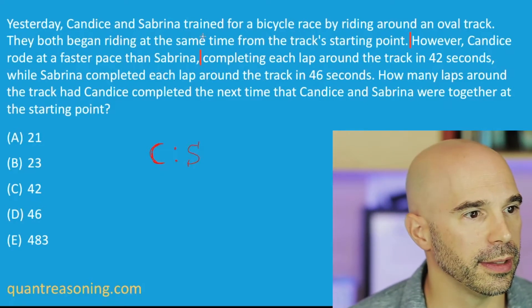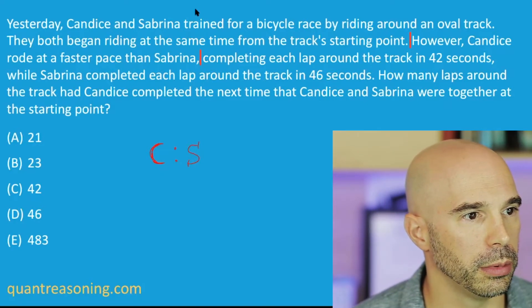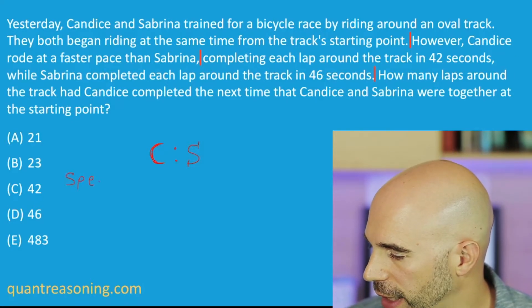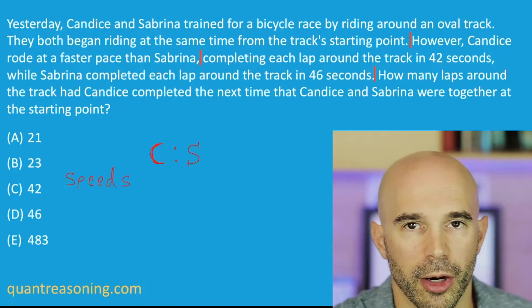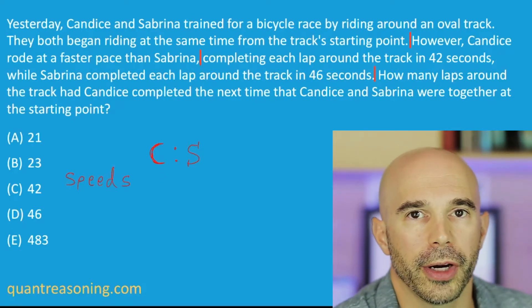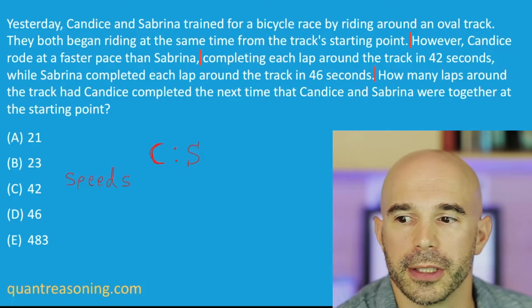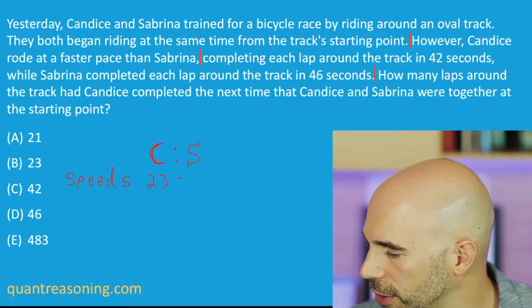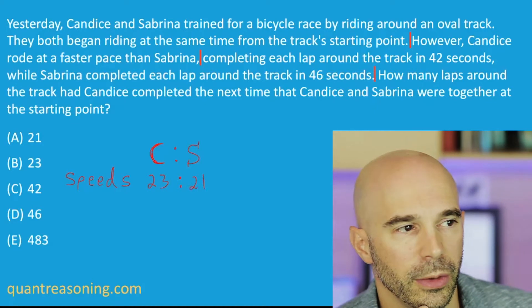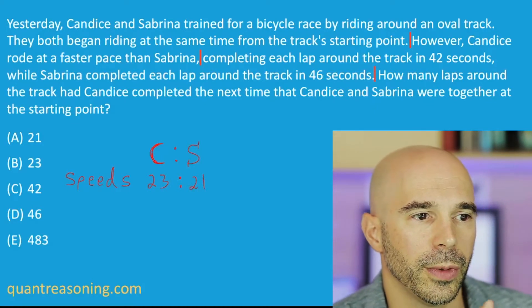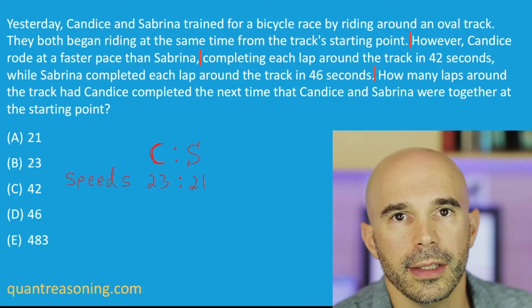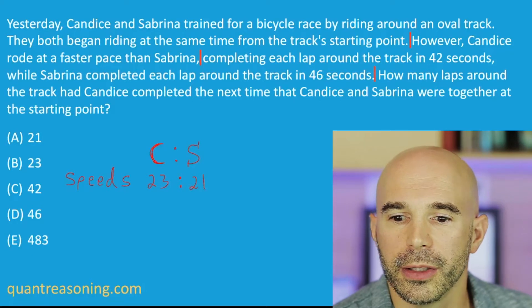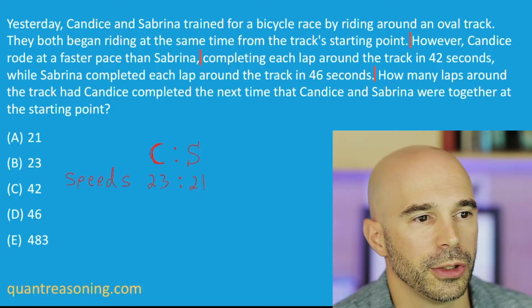As I continue reading, the next place I would pause is probably at the period. I'm interested in the speeds. I know that C is faster than S, but how much faster? Is she twice as fast? Thrice as fast? What's the ratio of their speeds? 46 to 42 — or if you reduce to the smallest integers that fit, 23 to 21. So Candice is not quite twice as fast as Sabrina. She's 23/21ths as fast. That's the ratio of their speeds.